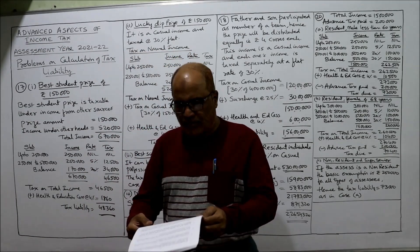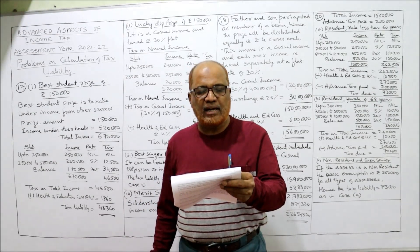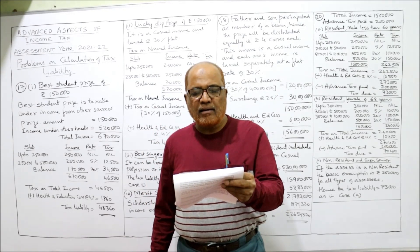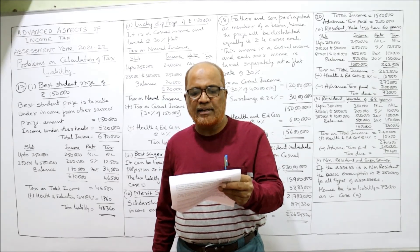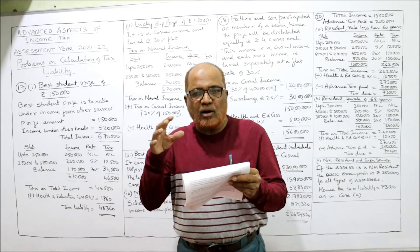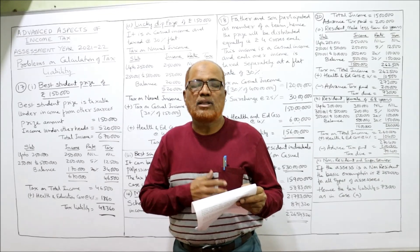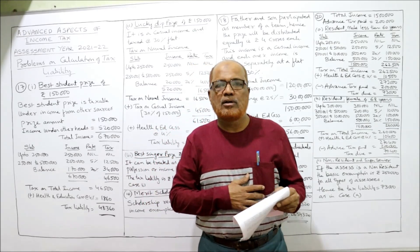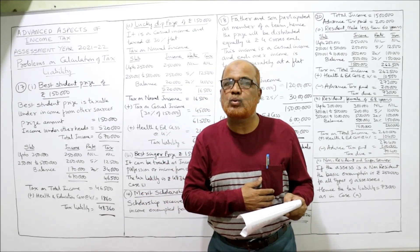Now see the 17th problem. During the previous year relevant to the current assessment year, in a college annual day function as a student, you have received the following. Calculate the tax liability for each case and comment upon the same, on the assumption that your income from other heads is five lakh twenty thousand. Assume you are a student who received different types of prizes at the annual day function.